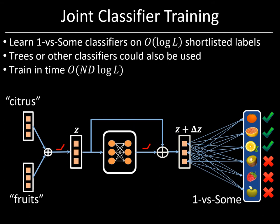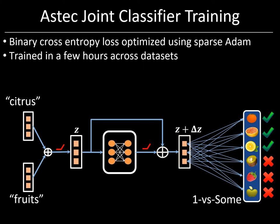In the fourth module, we jointly train a classifier along with the final features in time order n·d·log L. The simplest option would be to train one-versus-all classifiers on the order log L shortlisted labels per data point — referred to as a one-versus-some classifier — but trees or other classifiers could also be used. DeepXML also offers a wide choice of loss functions ranging from binary cross-entropy to the triplet or WARP loss, which could be combined with various regularizers such as L2 or the spread-out regularizer, optimized using SGD, ADAM, or whatever else works for your application. In Aztec, we train these one-versus-some classifiers using the binary cross-entropy loss without any regularization using the sparse ADAM optimizer, and this can be done in just a few hours on a single GPU across various short-text datasets.